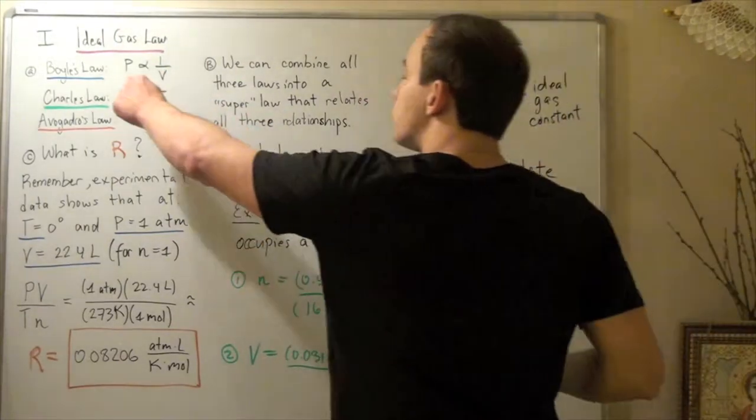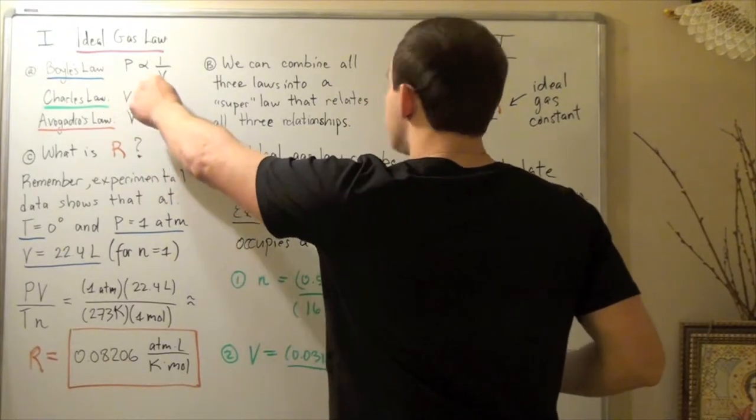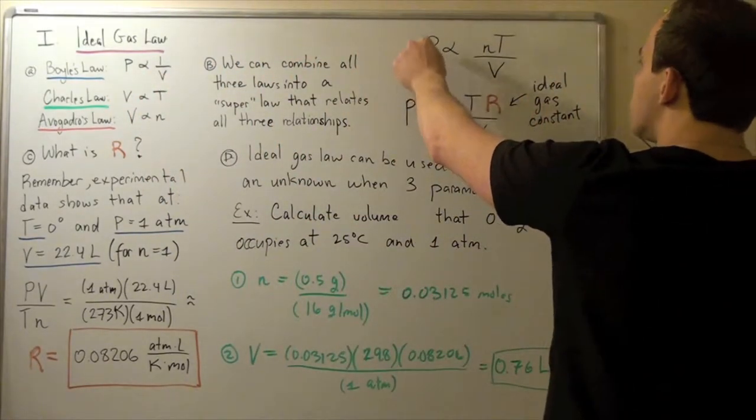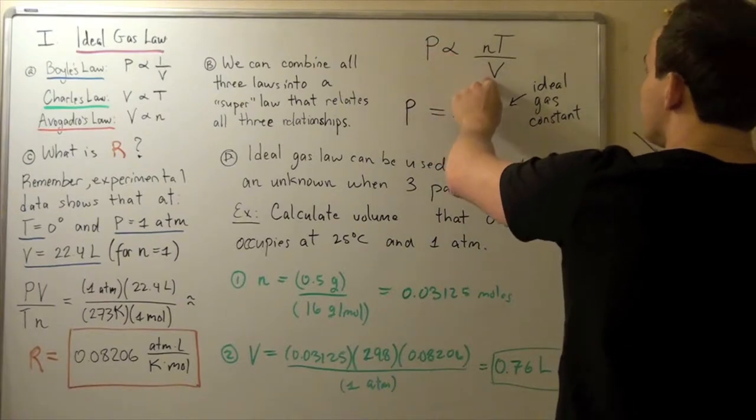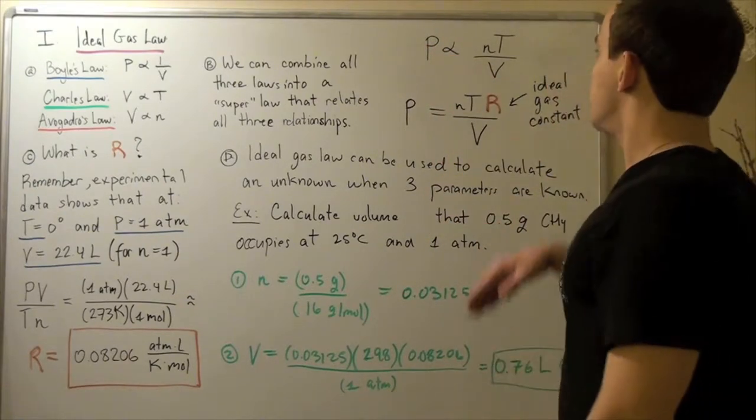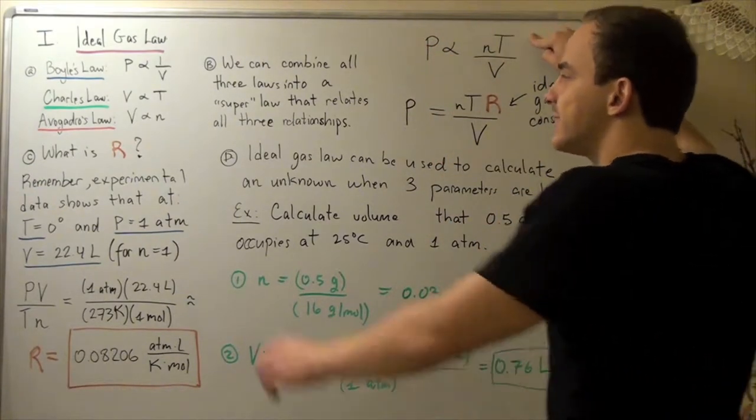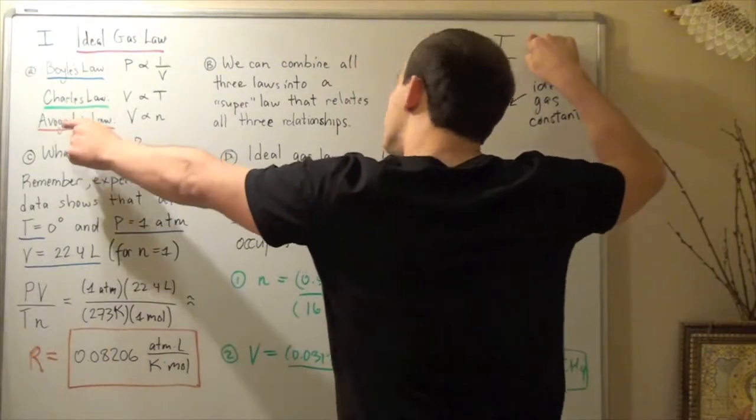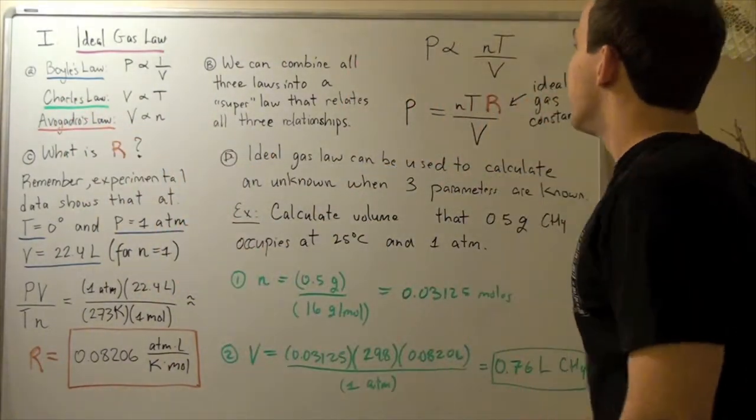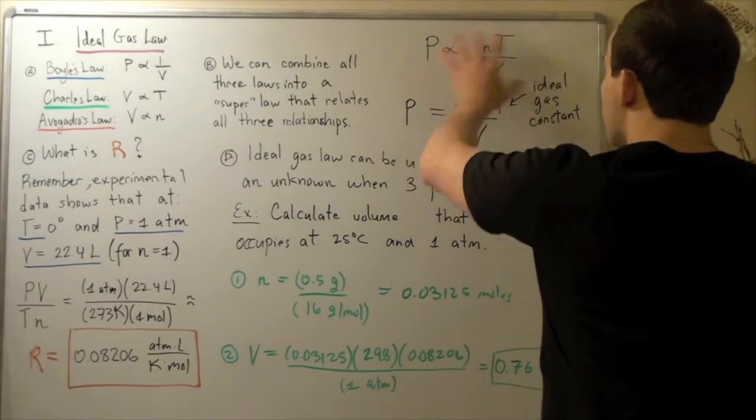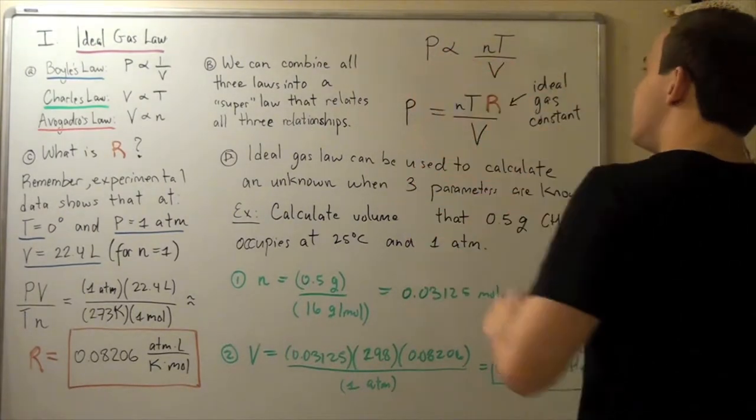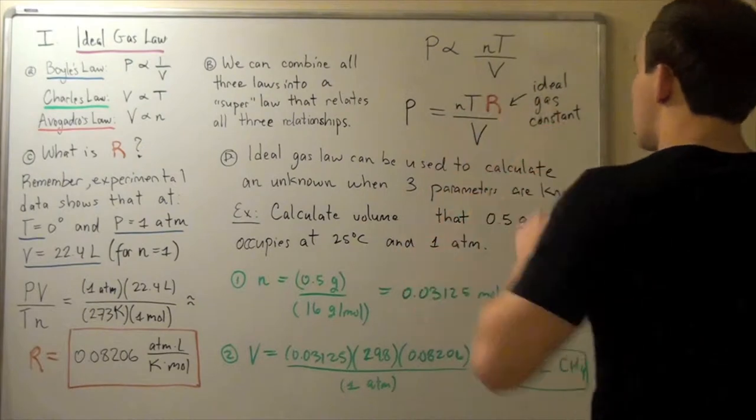Now recall that pressure is inversely proportional to volume, which is exactly what this says. Pressure is inversely proportional to volume and directly proportional to n and T. That's exactly what Charles' law and Avogadro's law tells us. Now the only problem in this top portion is that we want to go from a proportionality sign to an equal sign.